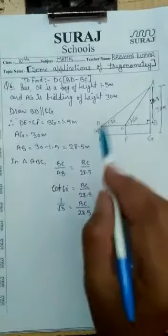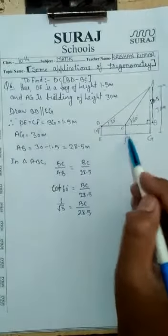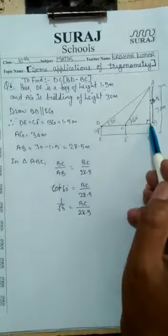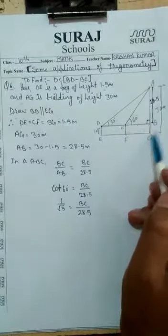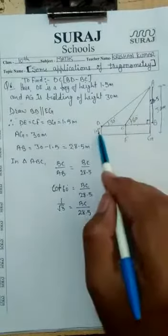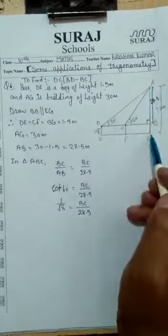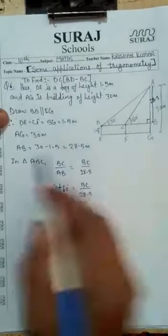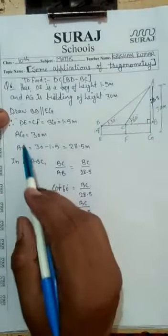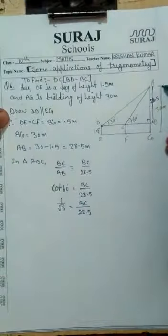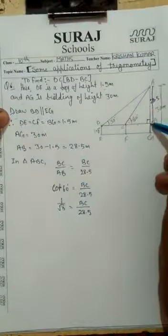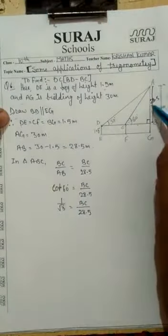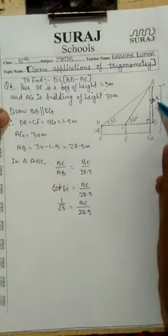DE = CF = BG = 1.5 meter. AG is 30 meter. AB has been calculated as 30 meter minus 1.5 meter, that is 28.5 meter.